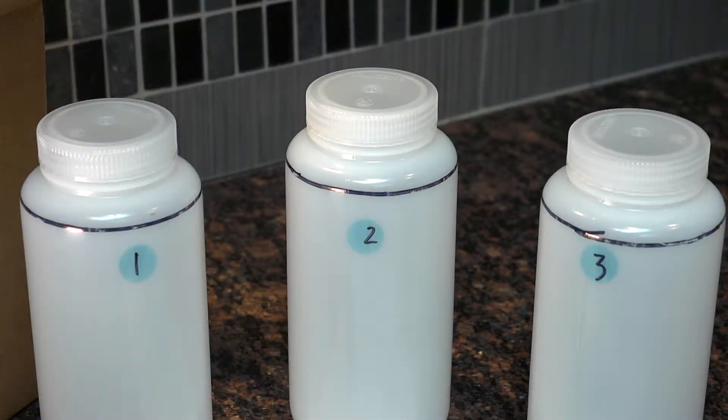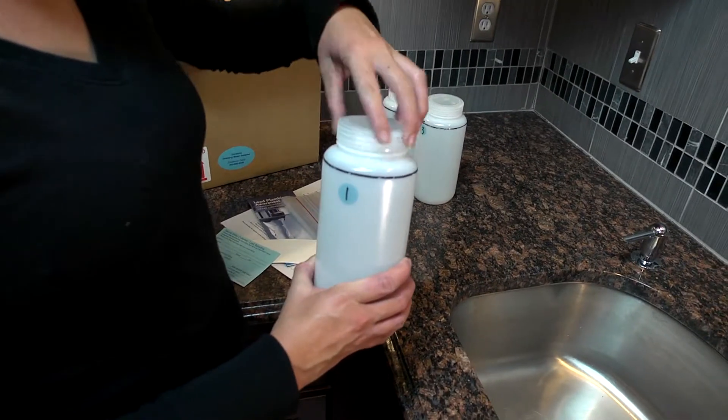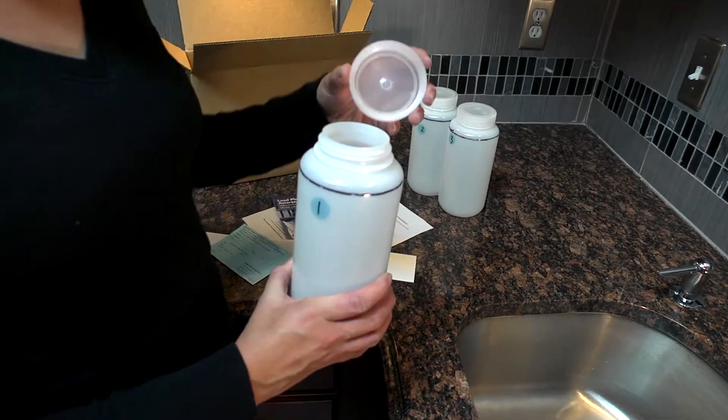Set the bottles next to the sink in order one, two, and three. Remove the lids and have a timer on your phone or watch handy.